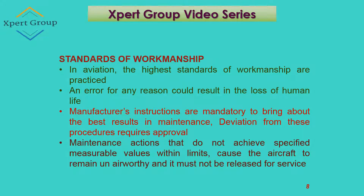Any error, for any reason, could result in the loss of human life. For example, if you are working on a Boeing 777 carrying almost 300 passengers and you make a mistake, that could result in a fatal incident taking many human lives. Manufacturer's instructions are mandatory to bring about the best results in maintenance, and deviation from these procedures requires approval. You cannot do anything on your own; you need permission from the manufacturers and must follow the relevant Technical Orders.